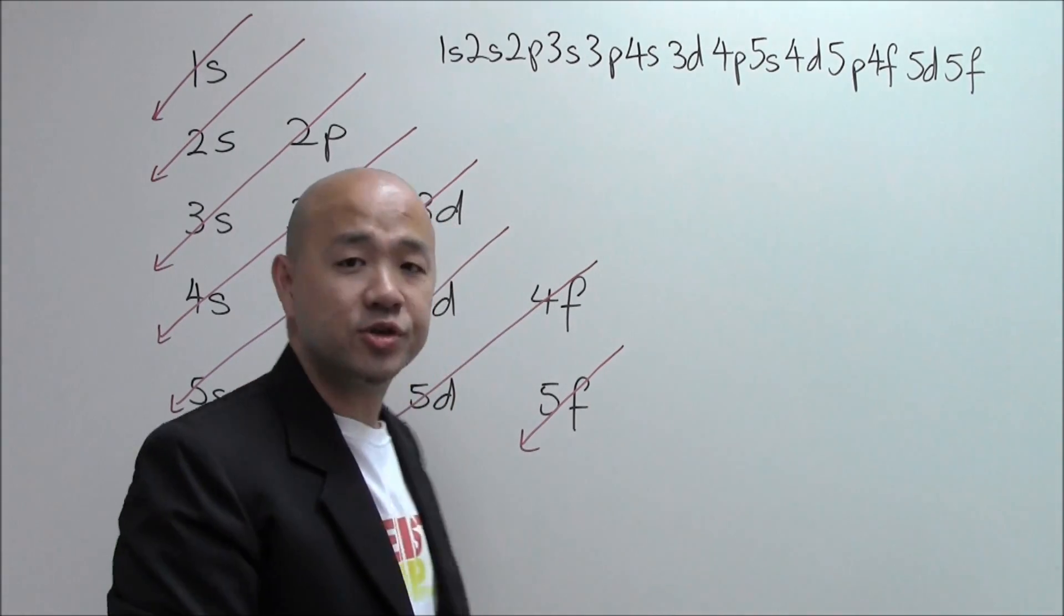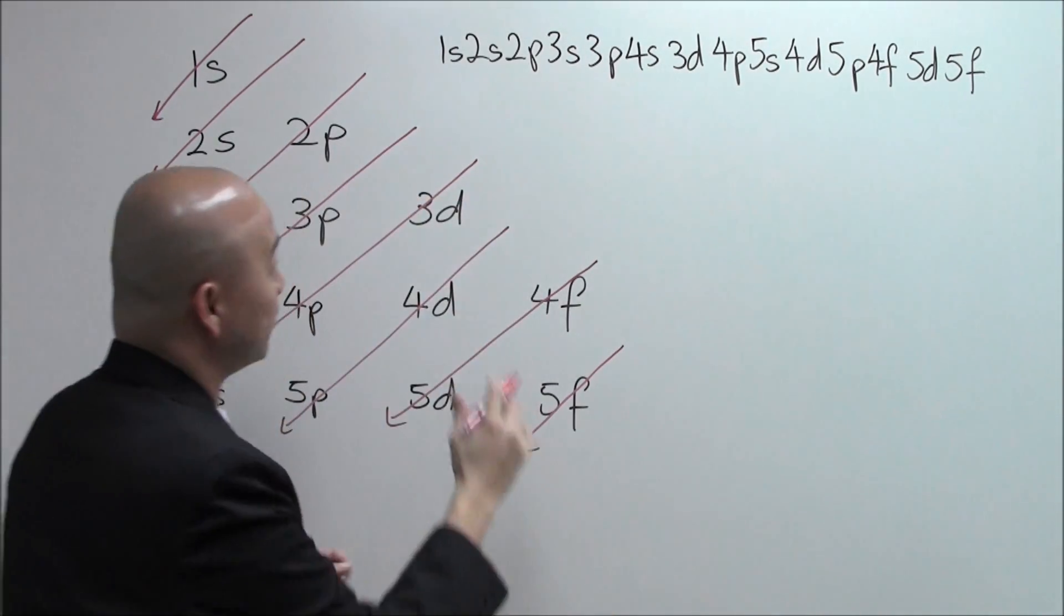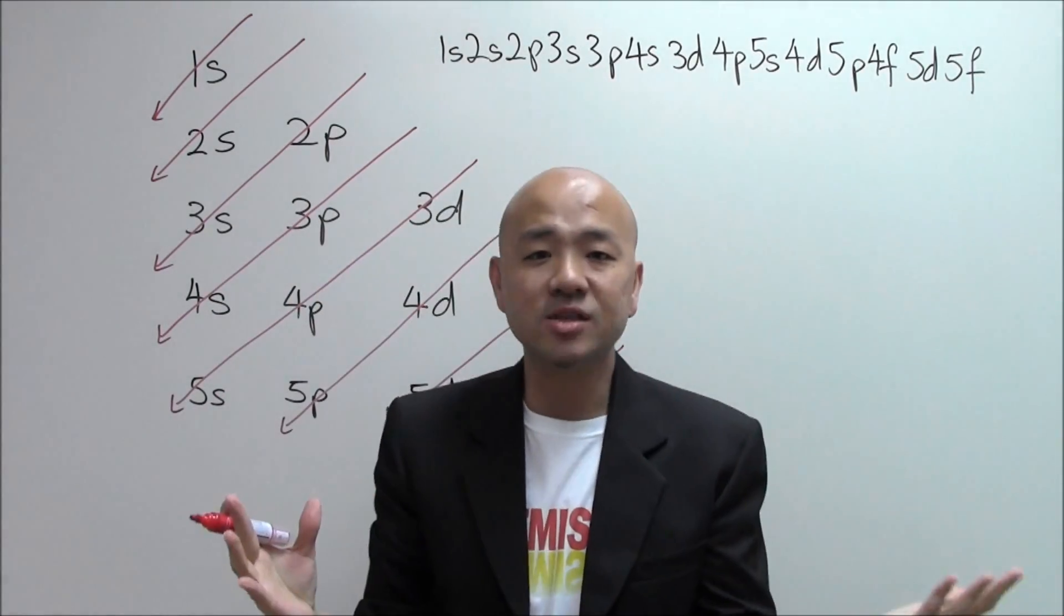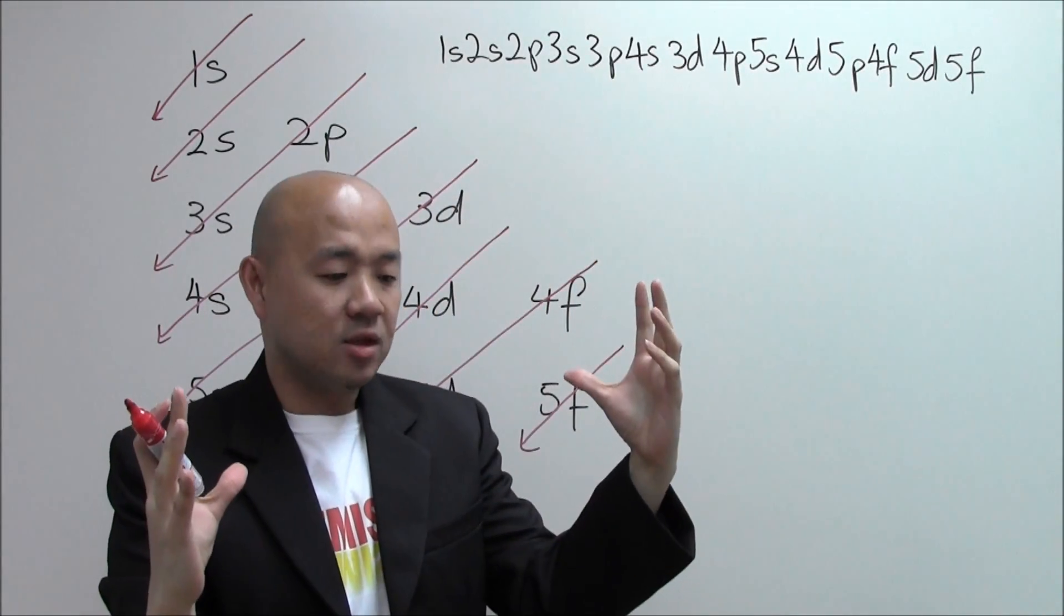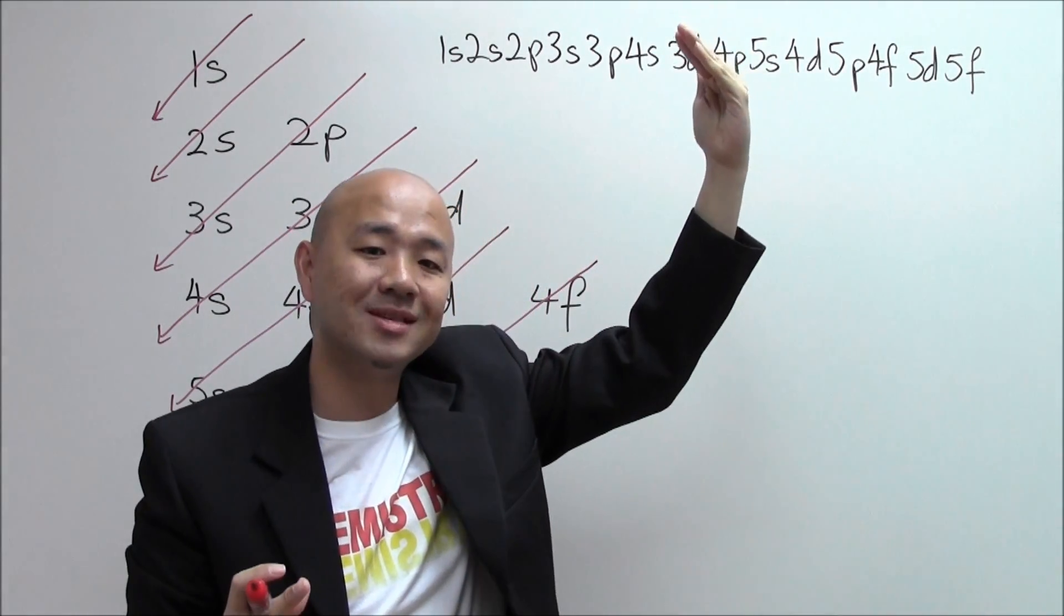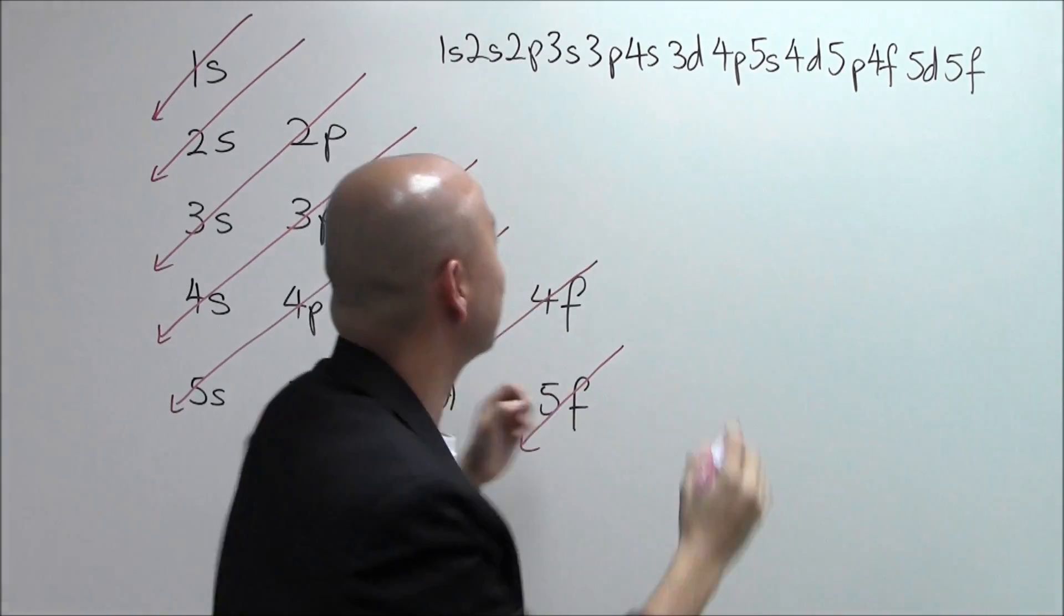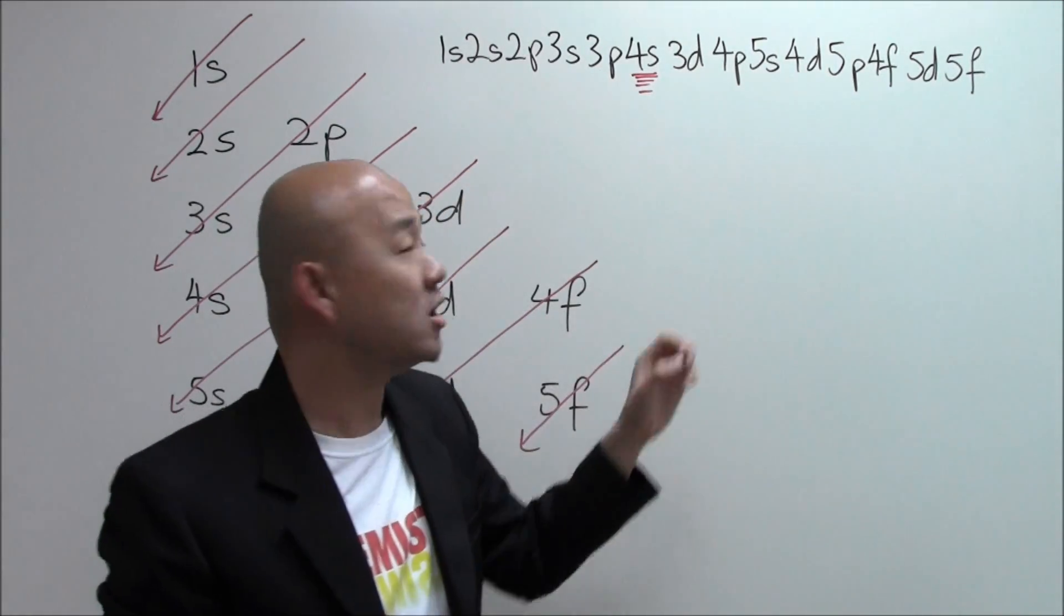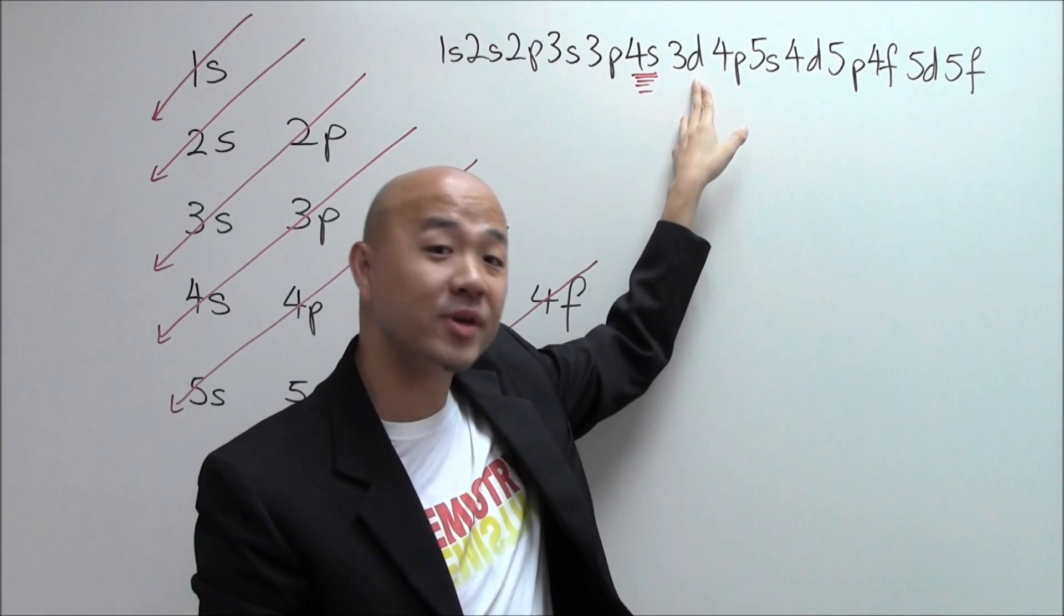Now, to point out something interesting to you, over here you realize that we understand that the 1s orbital has the lowest energy and as you go and count upwards, the energy level generally should be higher. Now, you realize over here, the 4s orbital is actually lower in energy than 3d.